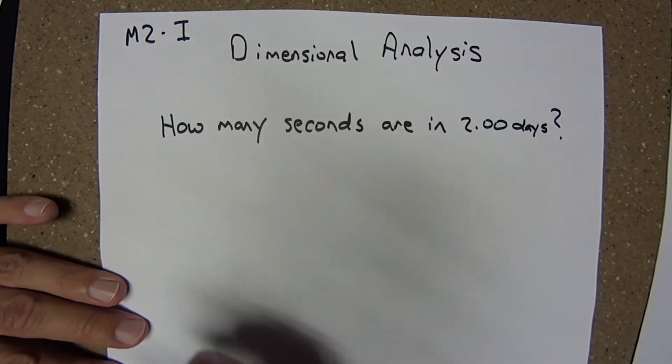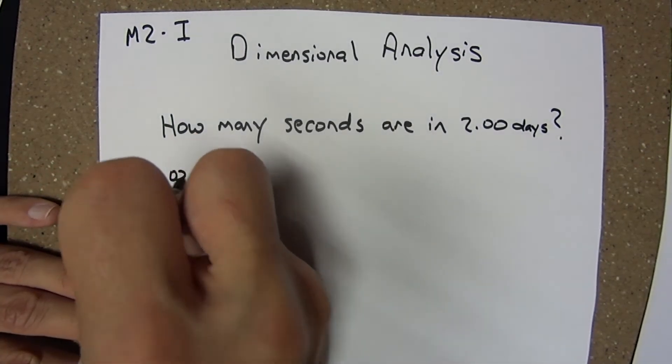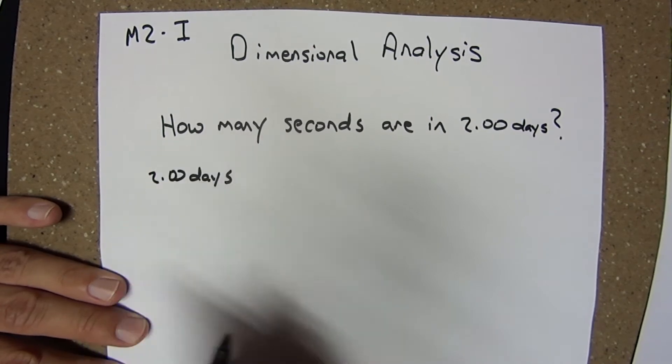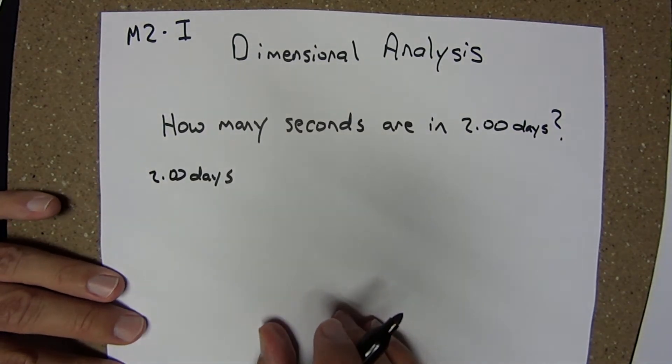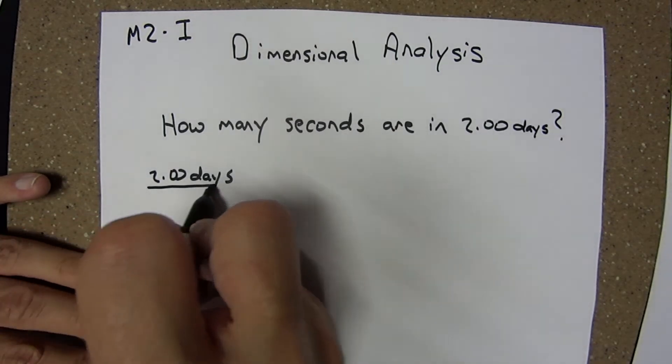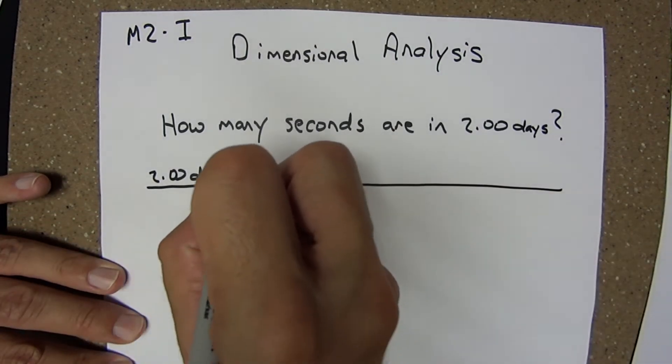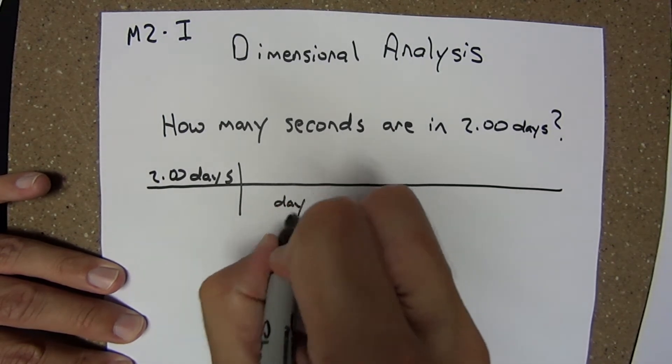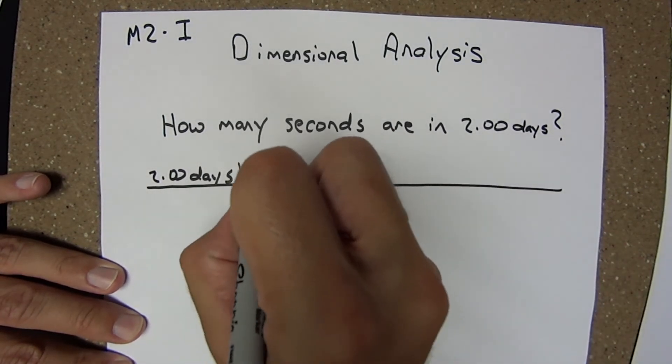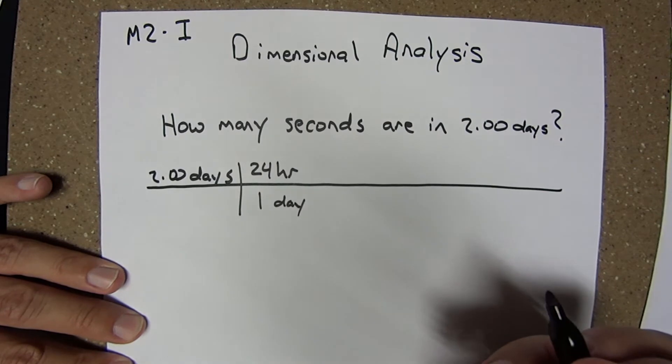I'll begin with what it is I know, 2.00 days. And through a series of conversions, I'll eventually get to seconds. Now where can I conveniently go from days? Well, I know that one day is equivalent to 24 hours.